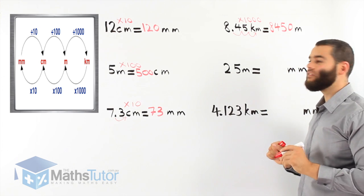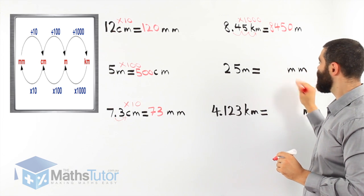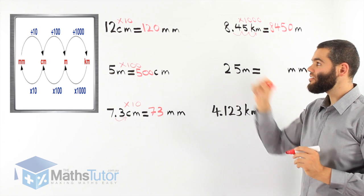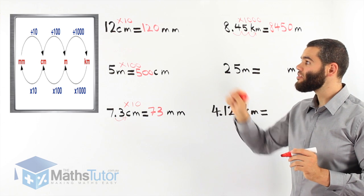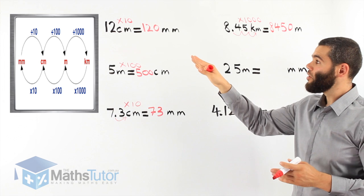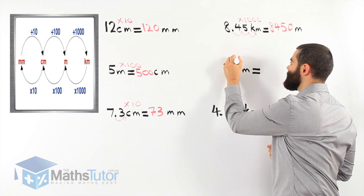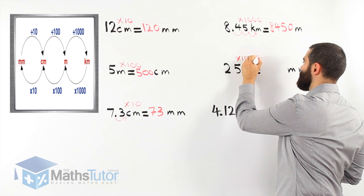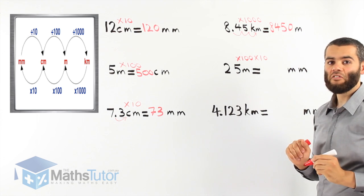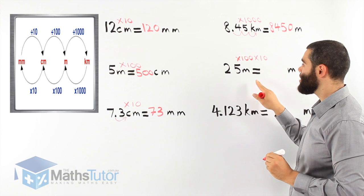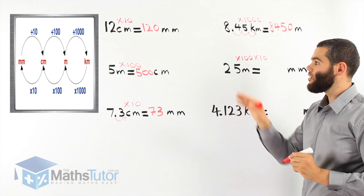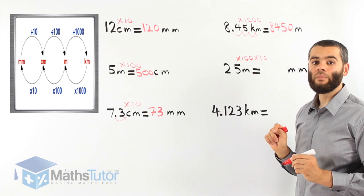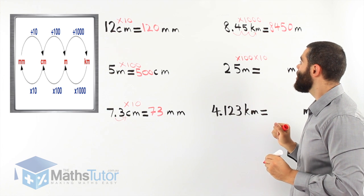Then we have 25 metres — we want to convert it to millimetres. We're going from metres all the way to millimetres, so we have to go through centimetres. Metres to centimetres is times 100, and then from centimetres to millimetres times by 10. It's a two-step process because we're moving two units across.